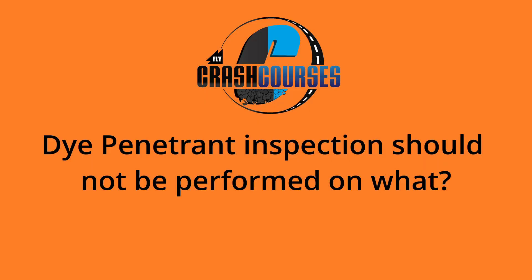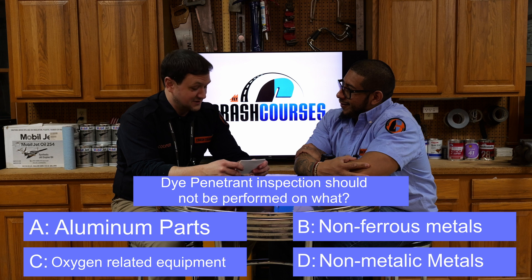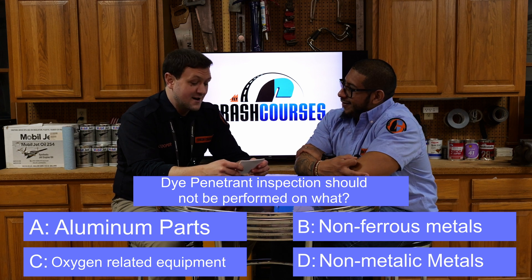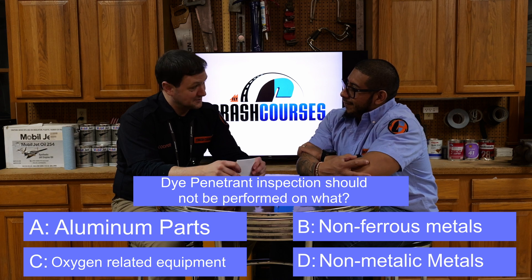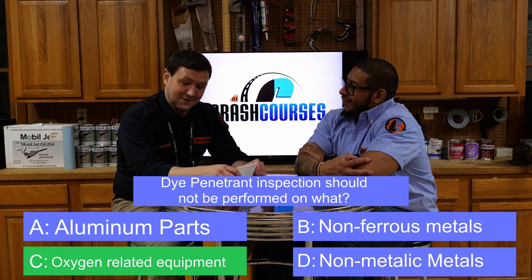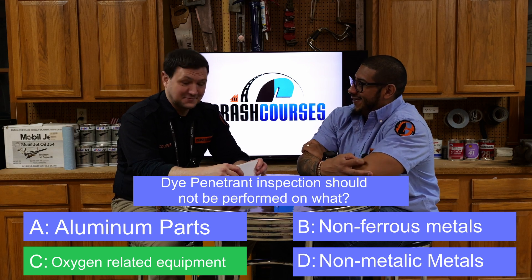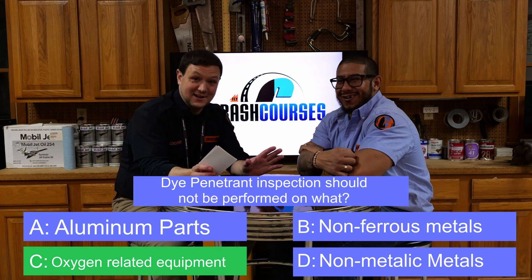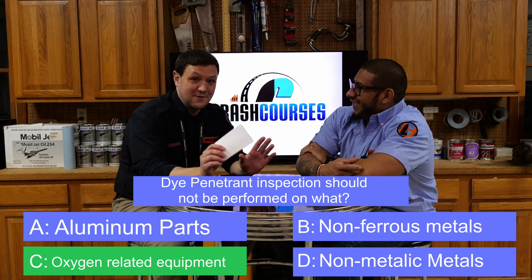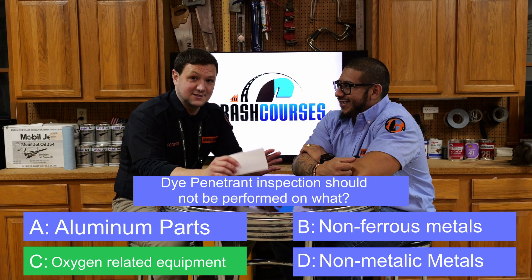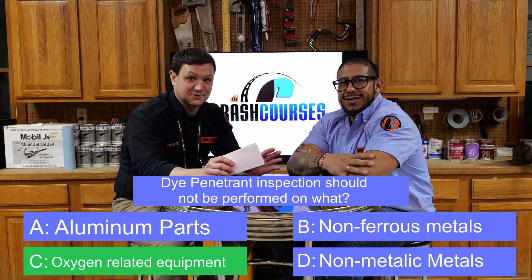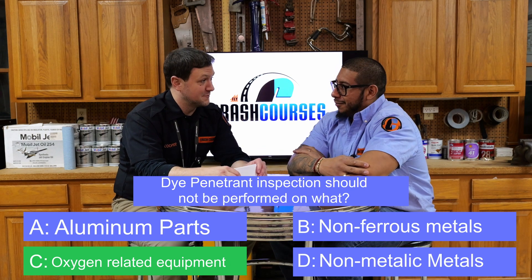Next: dye penetrant inspections should not be performed on what? A) aluminum parts, B) non-ferrous metals, C) oxygen-related equipment, or D) non-metallic metals? The answer is C — oxygen-related equipment. If you take anything from this video: you do not ever want to service oxygen with any type of oil or residue on your hands. Bad things will happen.